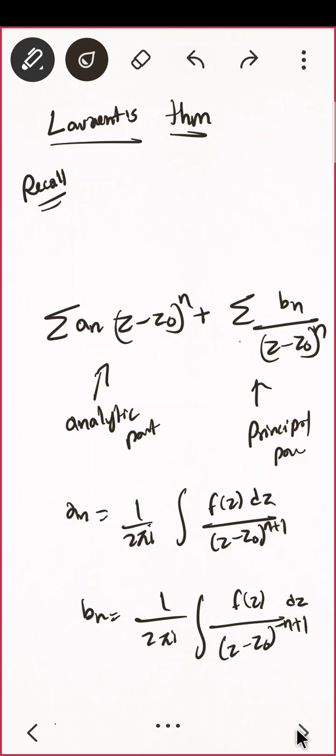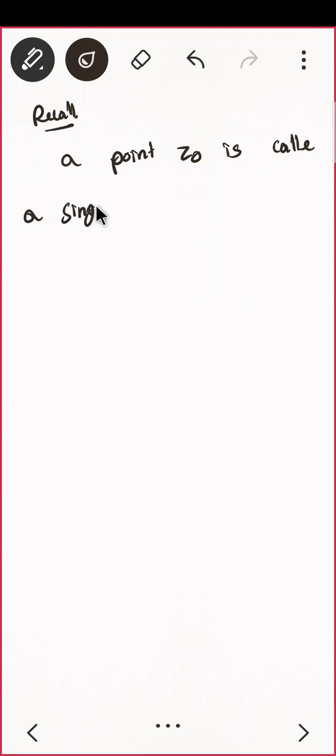The next part is residues and poles. First, recall: a point z₀ is called a singular point of a function f...